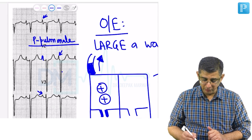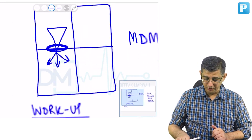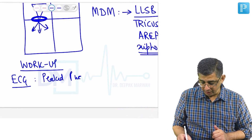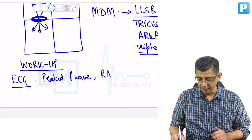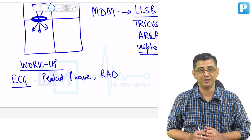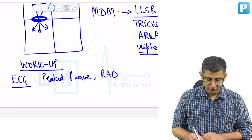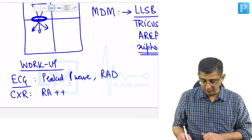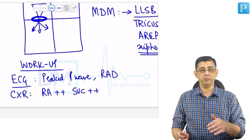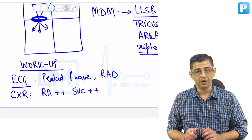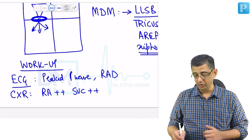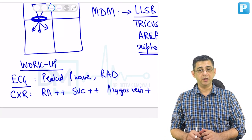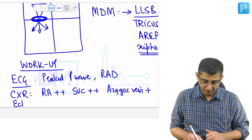A very prominent peaked P wave tells you there is a problem with the right side of the heart. So the ECG finding of tricuspid stenosis is P pulmonale or peaked P waves. The ECG will also show right axis deviation, because when any side of the heart becomes bigger, the axis tends to go towards that side. On chest X-ray, the right atria will appear relatively more prominent, as will the superior vena cava, since the right heart border is formed by the right atria and the SVC. The azygous vein shadow will also be relatively pronounced.